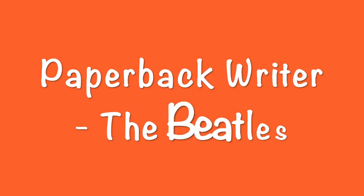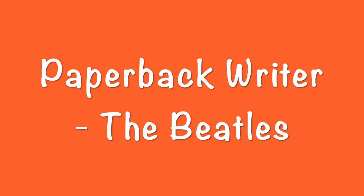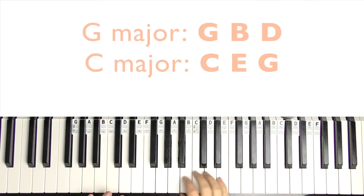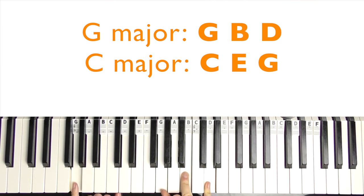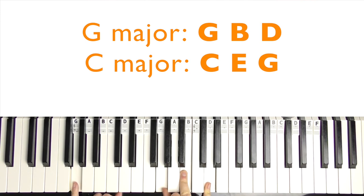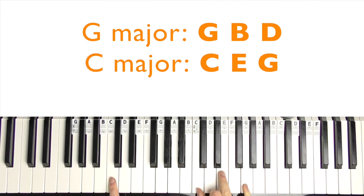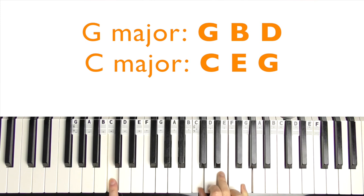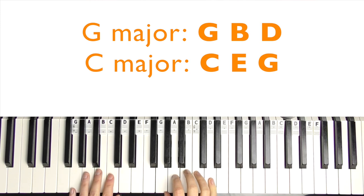So the next one we're going to look at is Paperback Writer by The Beatles. So this one uses G major. So G, B, and D. And the left hand just in G. And then it moves up to C major. So we have this chord in Eleanor Rigby. So C, E, G. So it mostly stays on the G.